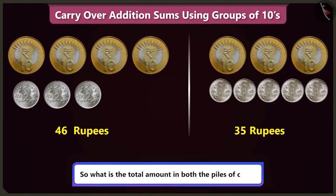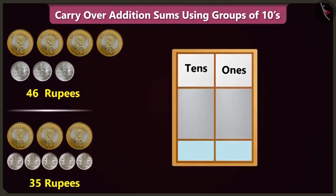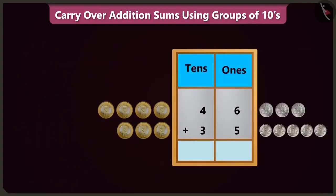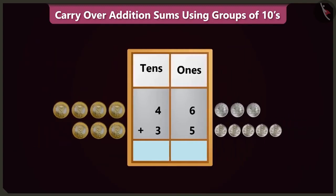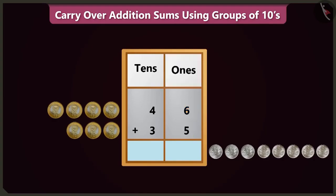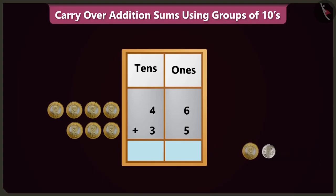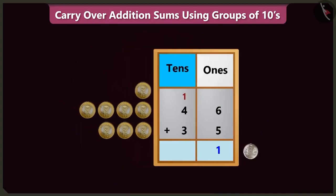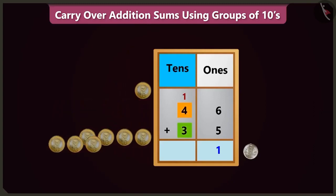So, what is the total amount in both the piles of coins? To find that out, we have to write both the numbers in the ones and tens boxes. To add 5 to 6 in the ones box, count after 6: 7, 8, 9, 10 and we will get 11. So, 11 means 1 ten and 1 one. We will write 1 one in the ones box and carry over 1 ten in the tens box. Now, in the box of tens, adding 4 and 3 will make 7.